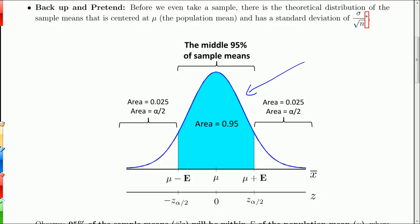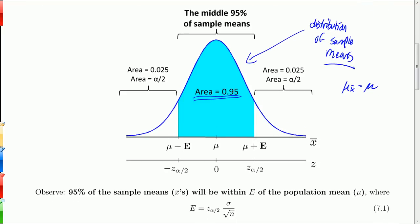So the way we start is we're going to back up and pretend. And back in the last chapter, we discussed the distribution of sample means. And so what that means is that we basically draw this normal distribution. And if we could find the middle 95% of all sample means, that's the distribution of the sample means right here. And that theory does require that our sample size is greater than 30 or the parent population was normally distributed.